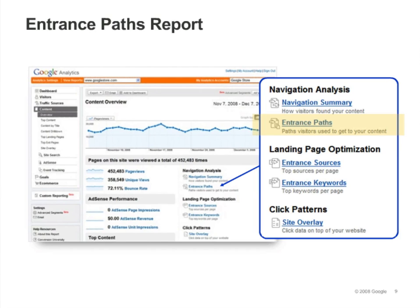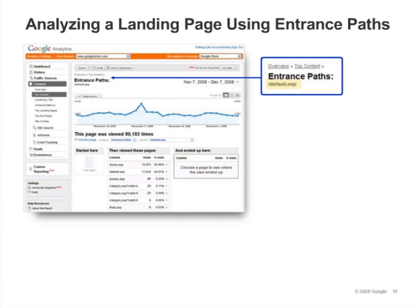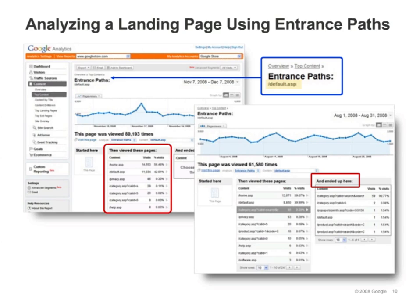The Entrance Paths report is a powerful tool for analyzing navigation paths. For example, if you want to find out whether people clicked the Purchase button on your landing page and actually completed the purchase, go to the Top Landing Pages report and click the landing page you want to analyze. Once you are on the Content Detail report for the page, click the Entrance Paths link as shown in the slide. You'll now see the Entrance Paths report for your landing page. In the middle column, you'll see all the possible clicks people made on the page. Choose the link that represents the Purchase page, and in the right-hand column you'll see all the pages visitors went to after the Purchase page. By looking at this list, you'll be able to see how many visits ended up on the Purchase Completion page. This report can show you if the landing page is doing the job you designed it for.